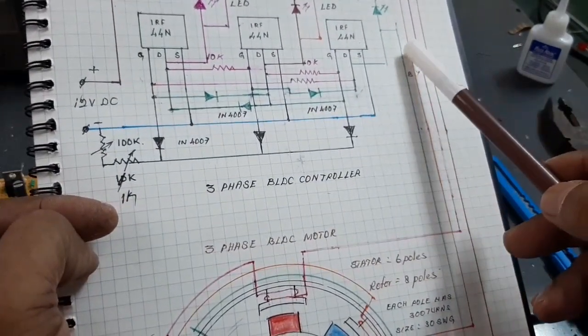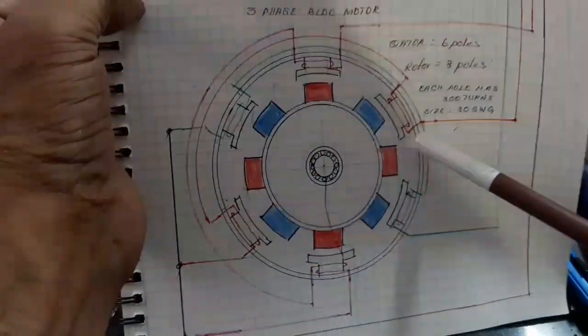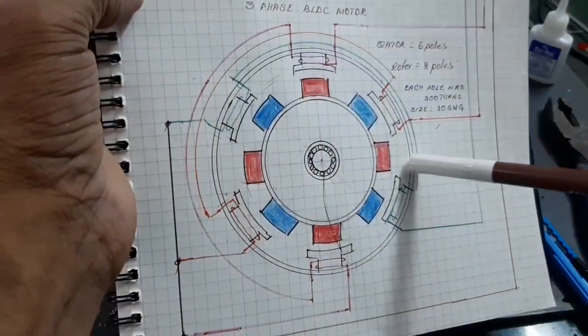Here, this is the common lead. And R, Y, B. The 3, 4 terminals are connected to the 6-pole stator and the 8-pole rotor. Homemade BLDC motor.